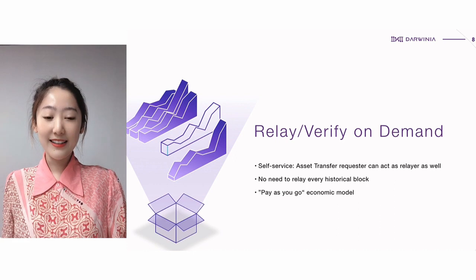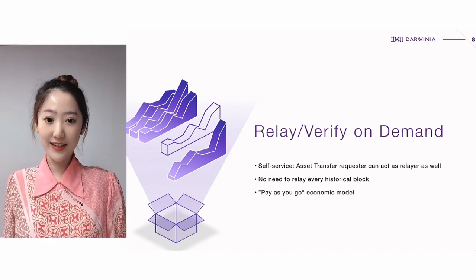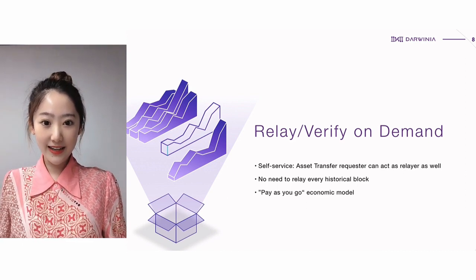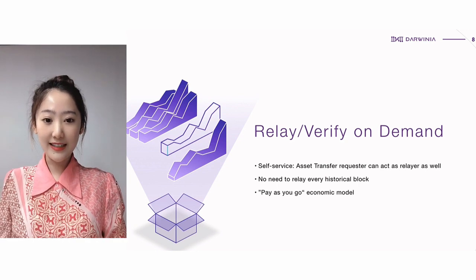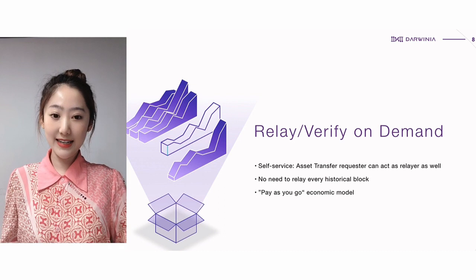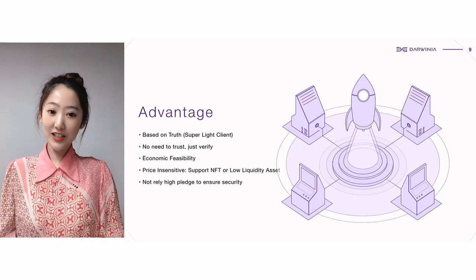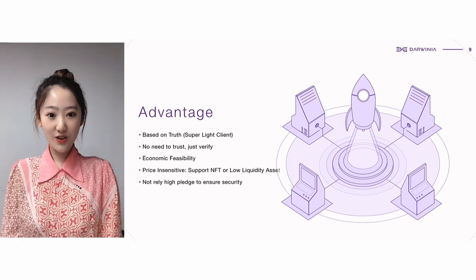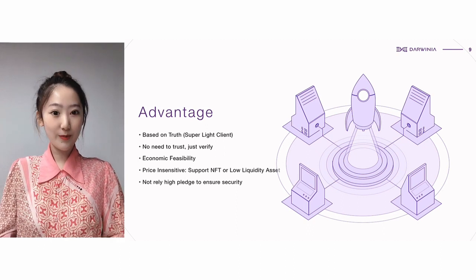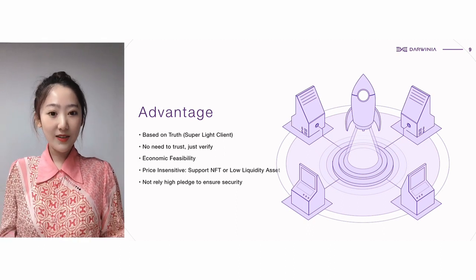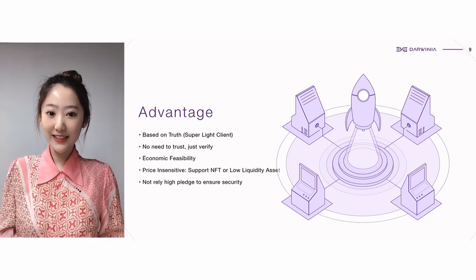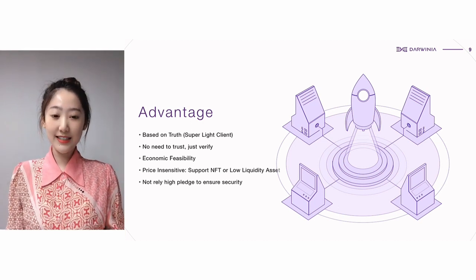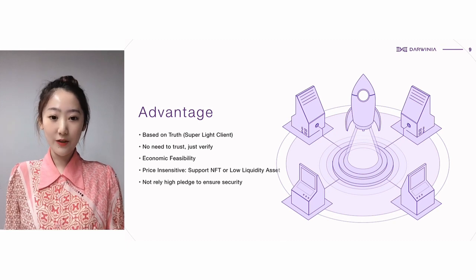After examining the mechanism of Darwinia Relay, Darwinia Bridge can operate in a self-service mode. For example, a requester, after a lock-up is found, can submit a proof and the relay block info to the chain relay itself. After the block is accepted, the event is confirmed as well. The chain relay maintenance cost can follow a pay-as-you-go model. In general, Darwinia Bridge is based on truth — a super-light client called Darwinia Relay. No trust is needed. It's economically feasible, pricing-insensitive, and it also supports low-liquidity assets and NFTs. That's what a truly decentralized bridge should be — objective and neutral, and it doesn't rely on pledge or collateral to ensure its security.